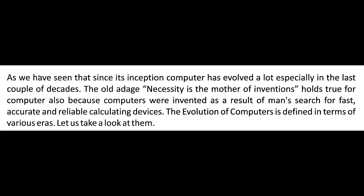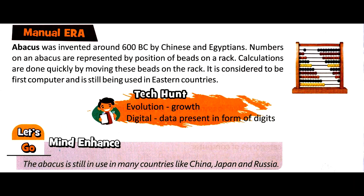Now we are going to discuss the manual era. In the manual era, the Abacus was invented around 600 BC by the Chinese and Egyptians. In the Abacus, numbers are represented by the position of beads on a rack. Calculations are done quickly by moving these beads on the rack. The Abacus is considered to be a fast computing device and is still being used in eastern countries like China, Japan and Russia.